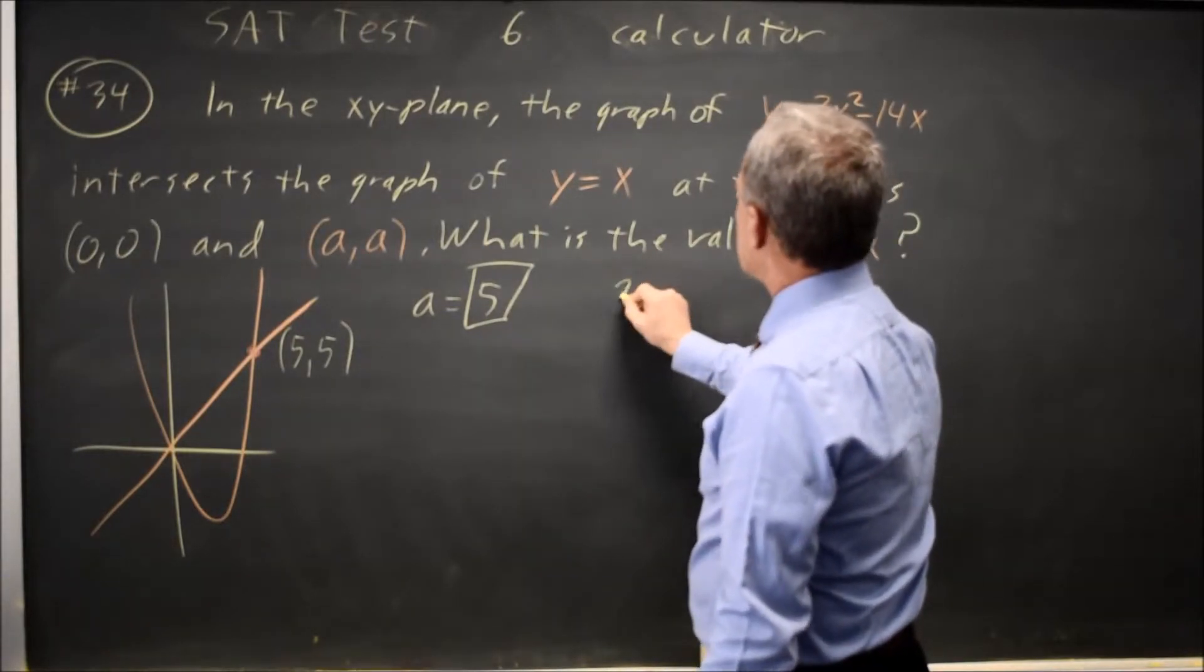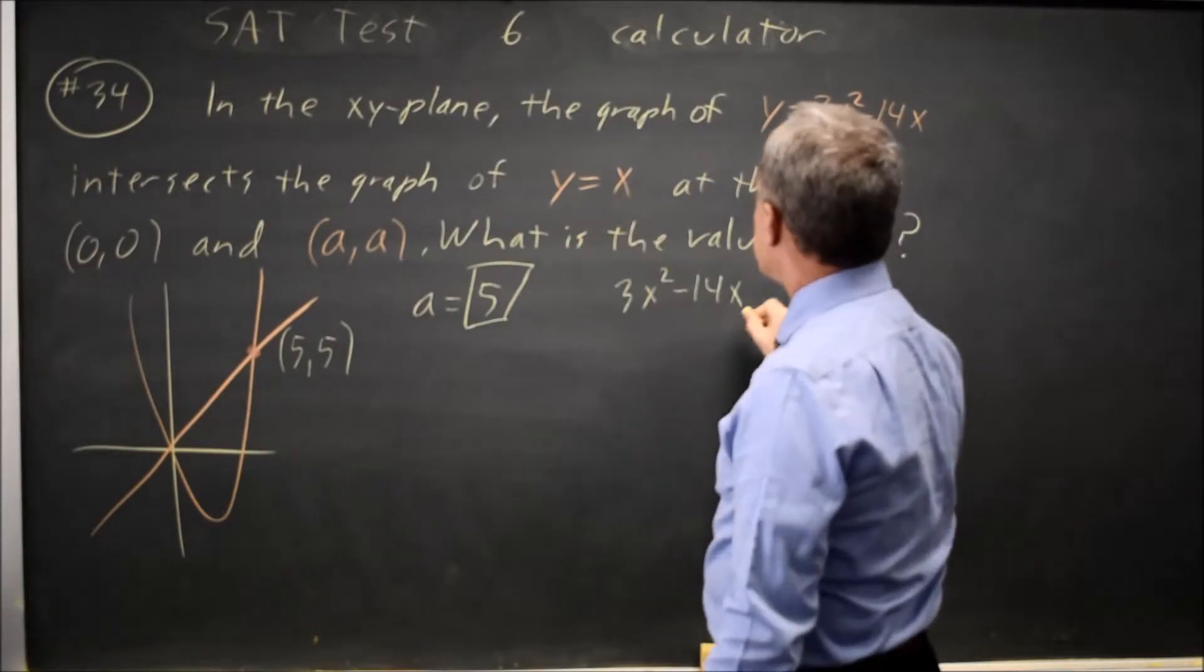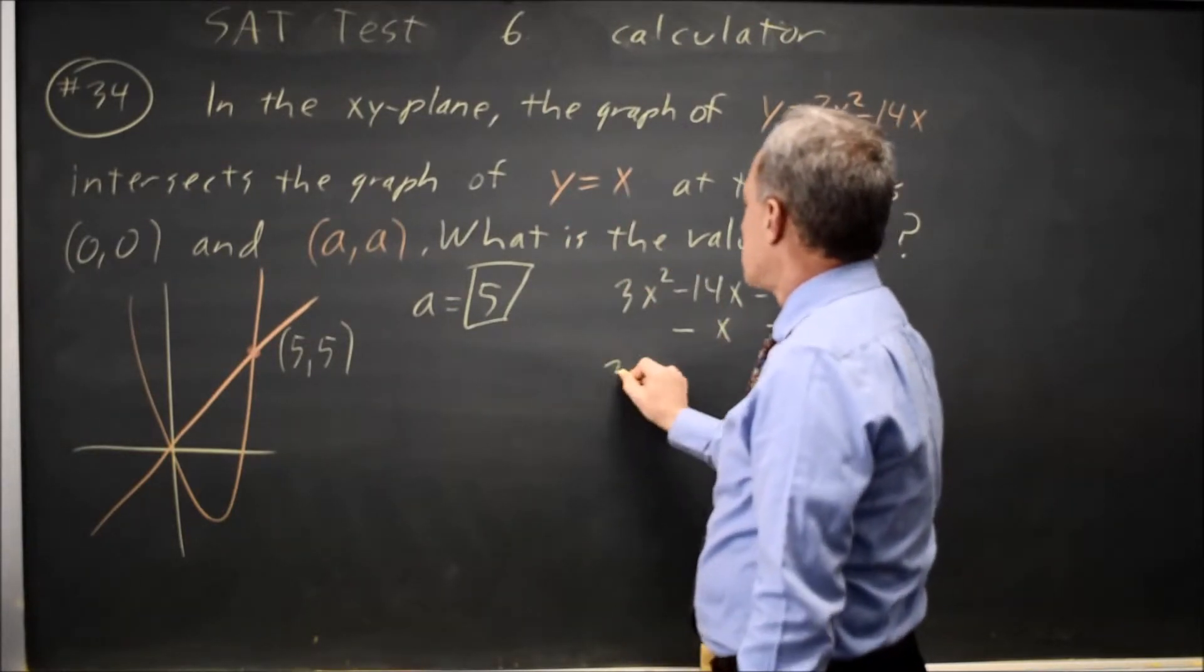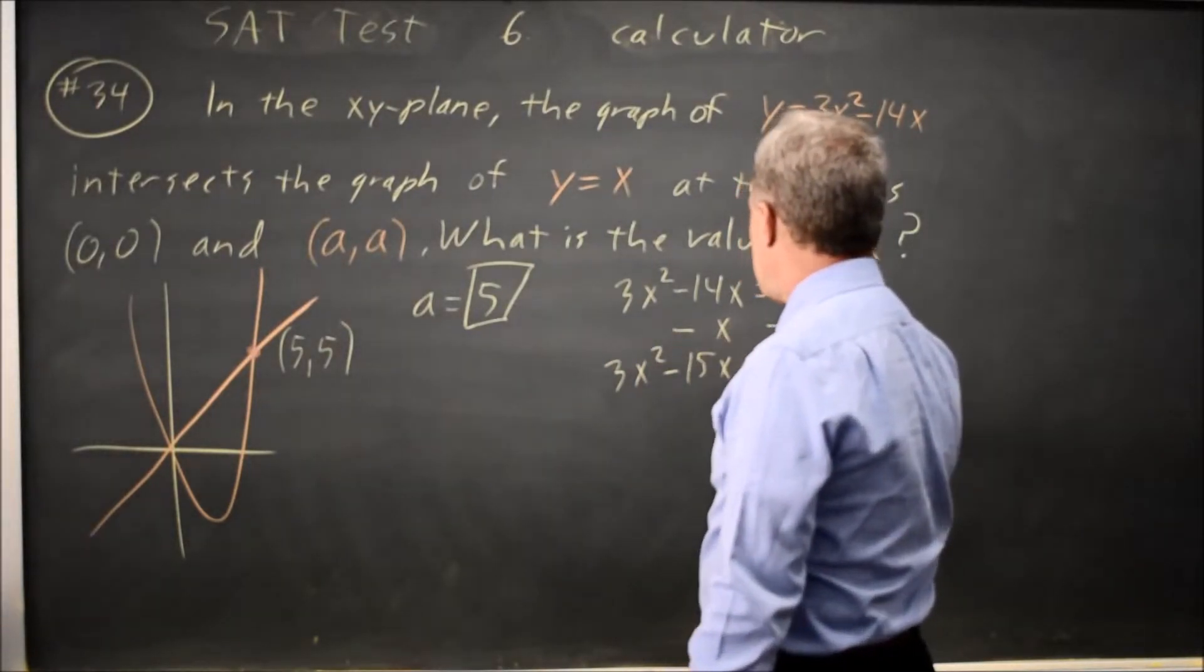The y-expression 3x squared minus 14x has to equal the y-expression x. Subtract x from both sides. 3x squared minus 15x equals 0.